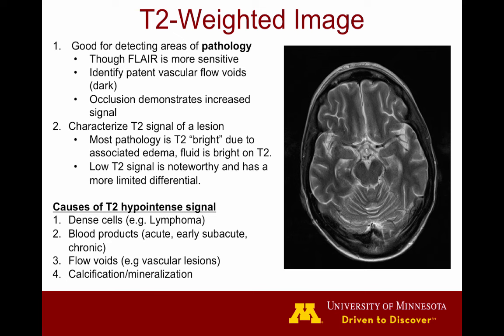You'll also want to remember a fairly short list of dark pathology on T2-weighted images. Things that generate dark signal include densely packed tumor cells such as with lymphoma or other small, round and blue cell tumors; certain phases of blood products; flow voids in fast-flowing blood vessels; tumors with fast-flowing blood such as arteriovenous malformations and highly vascular tumors like paraganglioma; and certain forms of calcification and mineralization.